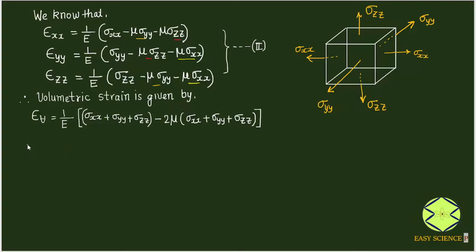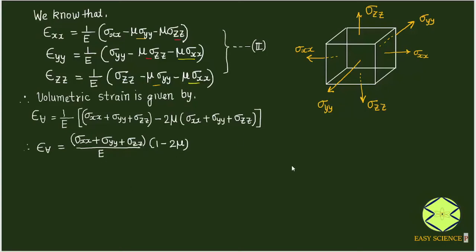We can further simplify: volumetric strain equals (σxx + σyy + σzz) divided by Young's modulus E, multiplied by (1 − 2μ). This is a very simple expression for volumetric strain when you have the values of stresses in the x, y, z directions, and you can easily find out the volumetric strain in a three-dimensional object.